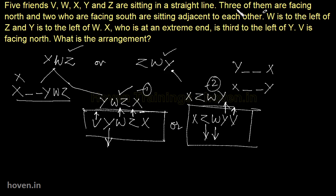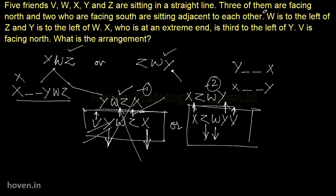In the third pass, re-reading 'three of them are facing north and two who are facing south are sitting adjacent' — in the first candidate, three are already facing north, so X must face down. But then X and Y are not adjacent, which violates the condition. So that arrangement is struck out. In the remaining arrangement, X faces upward, giving us X, Y, and V facing north, and Z and W facing south — and Z and W are sitting together, satisfying the condition.